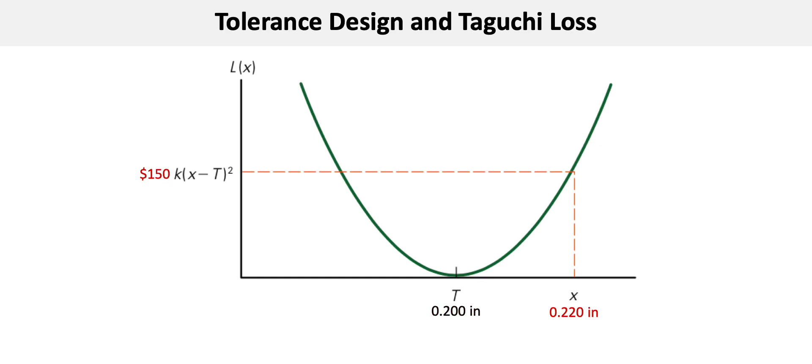Now also notice that the curve is the same on both sides of T. So whether we take T plus 0.020 or T minus 0.020, the losses are still the same.